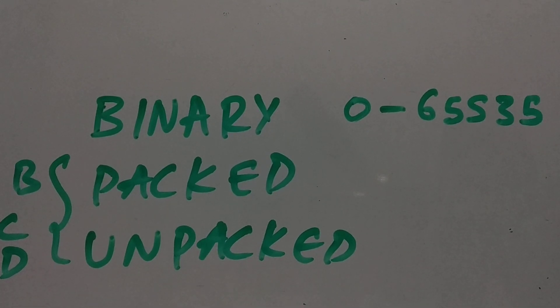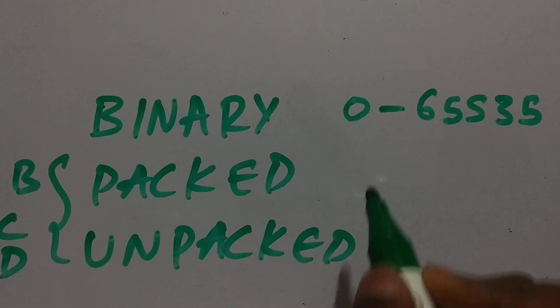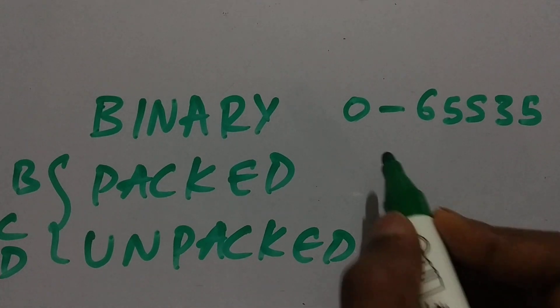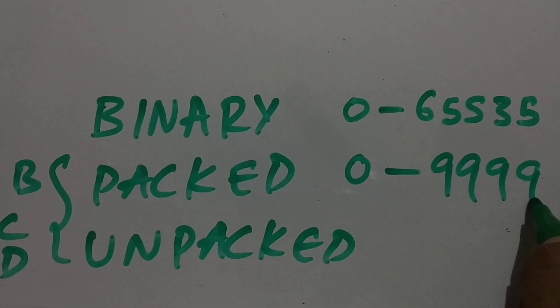In packed BCD, because of the 4-bit restrictions and the inability to use the 6 unused combinations, we are not able to use the extra 6 bits. As a result, we will be limited to 0 to 9999 only. So the range of a 16-bit packed BCD is 0 to 9999.